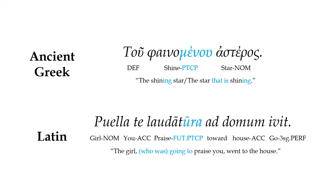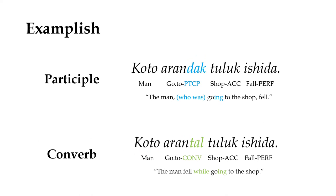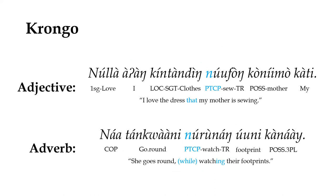Alternatively, another common way for converbs to evolve is from participles, which in languages like Ancient Greek and Latin are used in much the same way as converbs for the purposes of combining clauses. Crucially though, participles are adjectives, and therefore they modify a specific noun in the clause, not the verb itself like a converb does. But with time, the participle may come to be reanalyzed as describing the clause as a whole rather than any particular noun within it.